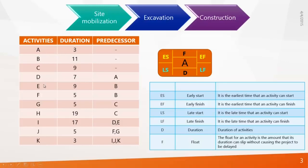Here I have listed a set of activities with their duration and predecessors. Let's first understand what activity, duration, and predecessors mean. Consider three construction processes: mobilization, then excavation, then construction. Every activity has a relationship to others — some must wait until others complete. This logic or relationship is called predecessors and successors, and the time needed to complete an activity is called duration.